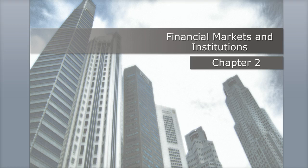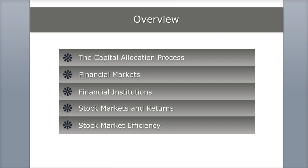Hi, and welcome to Chapter 2, Financial Markets and Institutions. In this chapter, we're going to be talking about the capital allocation process, financial markets, financial institutions, stock markets and returns, and stock market efficiency.